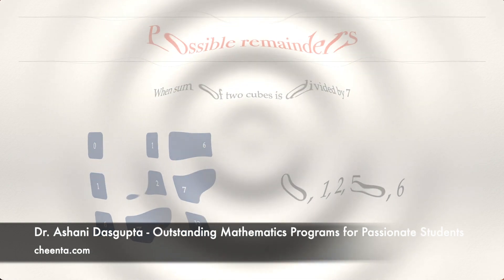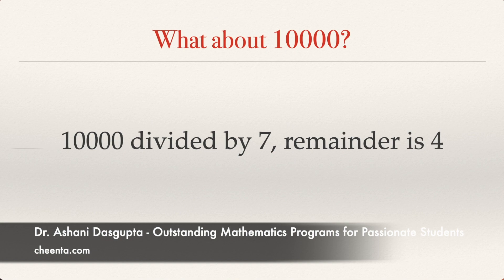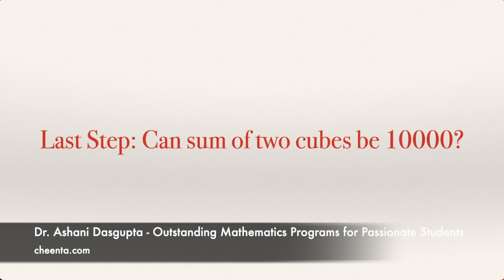Now let's focus on 10,000. When 10,000 is divided by 7, the remainder is 4. We found that the sum of 2 cubes gives remainders 0, 1, 2, 5, or 6 when divided by 7. But 10,000 gives remainder 4 when divided by 7. Since 4 is not among the possible remainders for a sum of 2 cubes, it is impossible that x cubed plus y cubed equals 10,000. Put your comment below and tell me what you think — you should be able to finish it up from here.